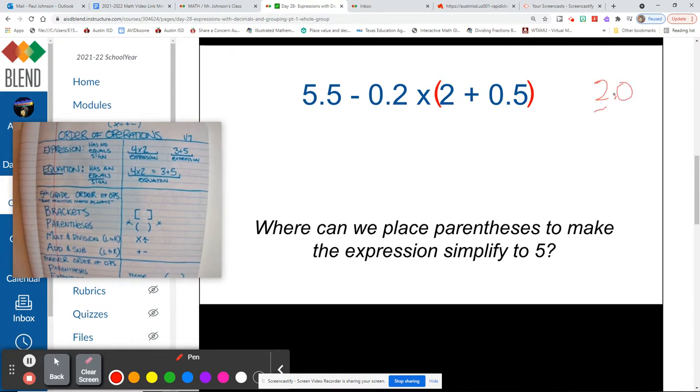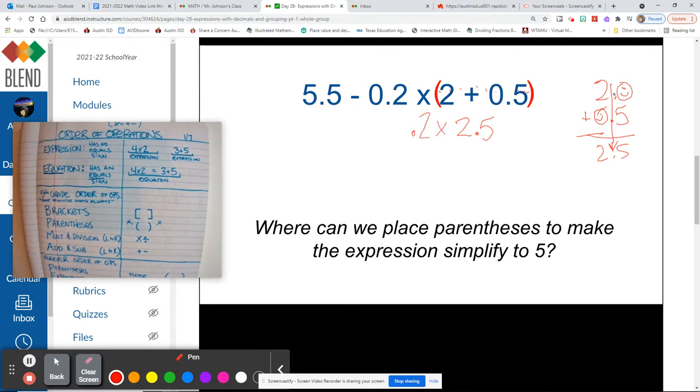So if we're adding 2 and 5 tenths, we get 2 and 5 tenths. Drop that decimal point like it's hot. So 2 and 5 tenths, and then we can cross this out a little bit. Now we have 0.2 times 2 and 5 tenths, and we have not used the 5.5 or the subtraction sign.